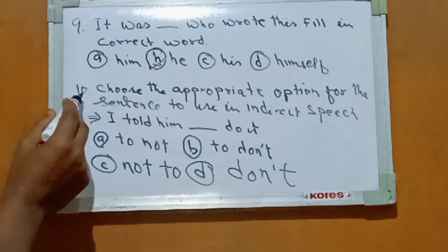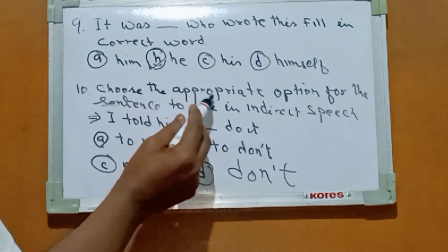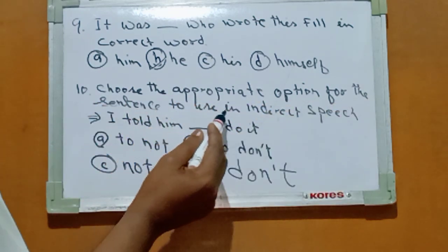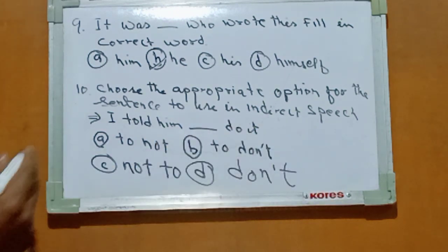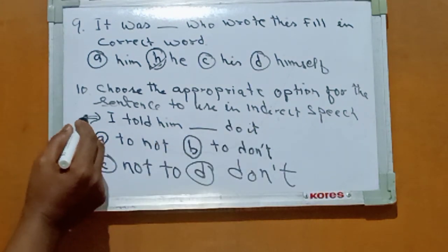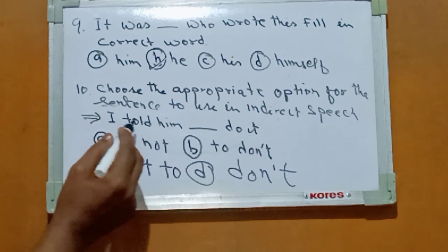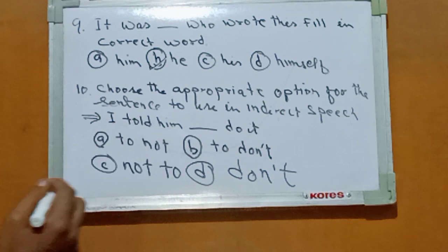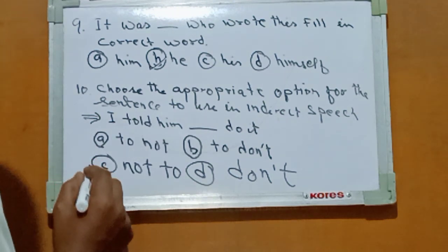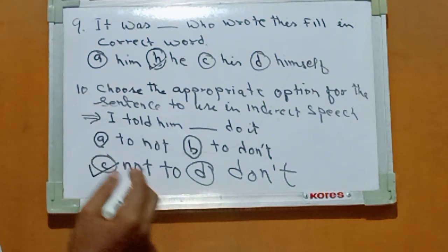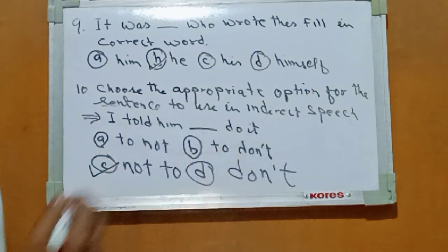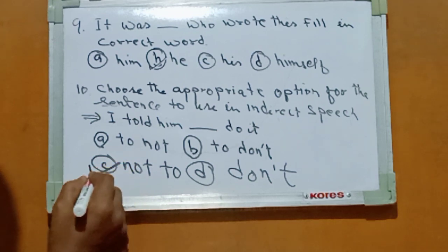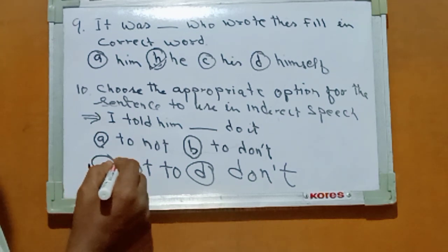Number ten: choose the appropriate option for this sentence to use in indirect speech. The question is: I told him dash do it. The right answer is not to do. I told him not to do it. Option C. Right answer is Option C.